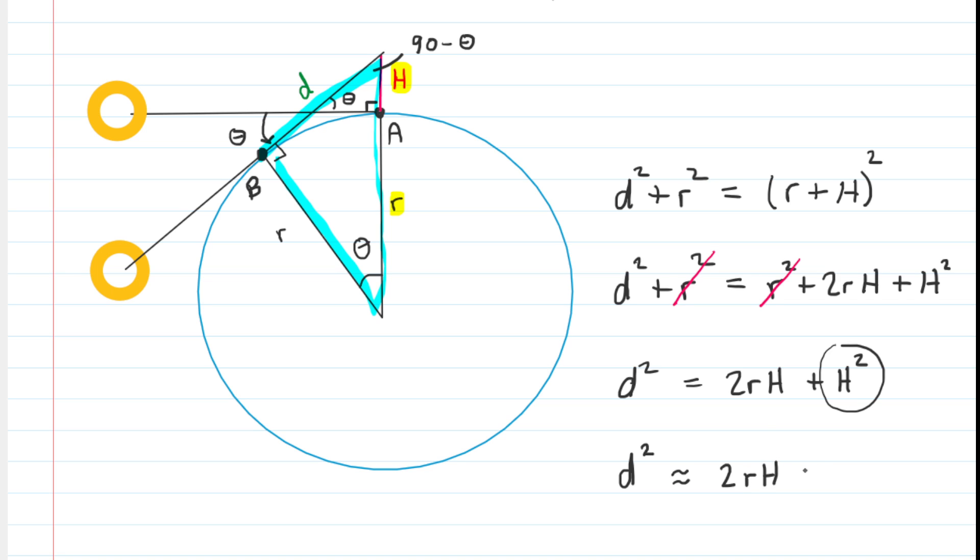We can say that D squared is just approximately 2 times the radius times the height. And again, we're going to drop that H squared term. So this is a result that we're going to hold on to. We're just going to put that in a box. We will refer back to that shortly.